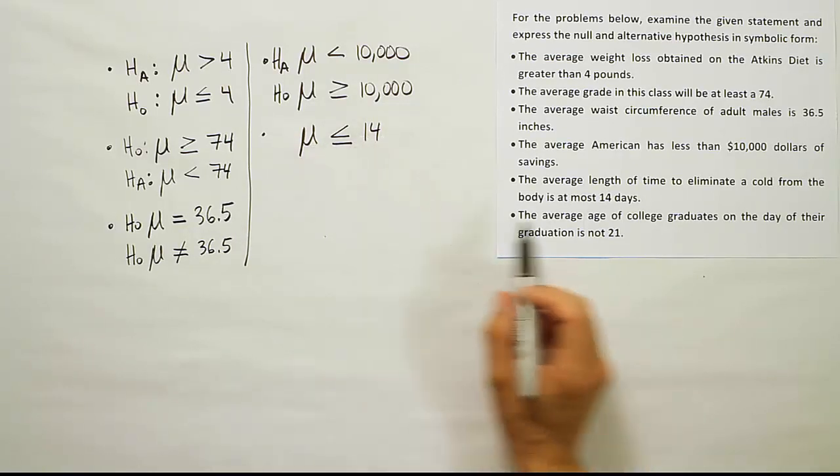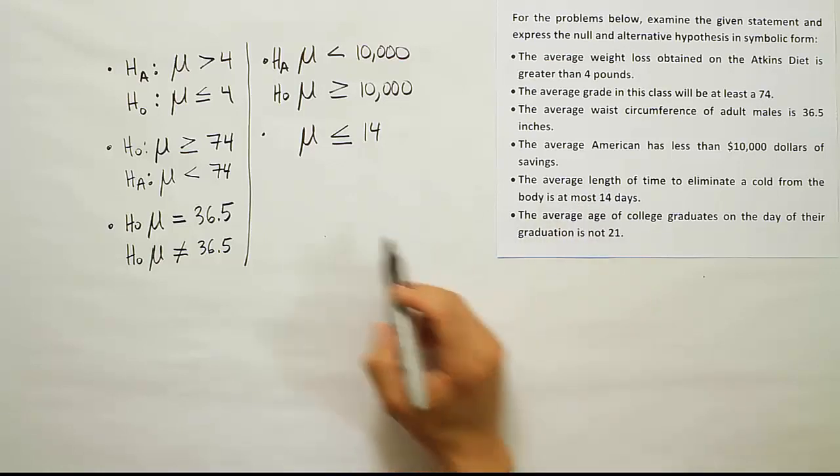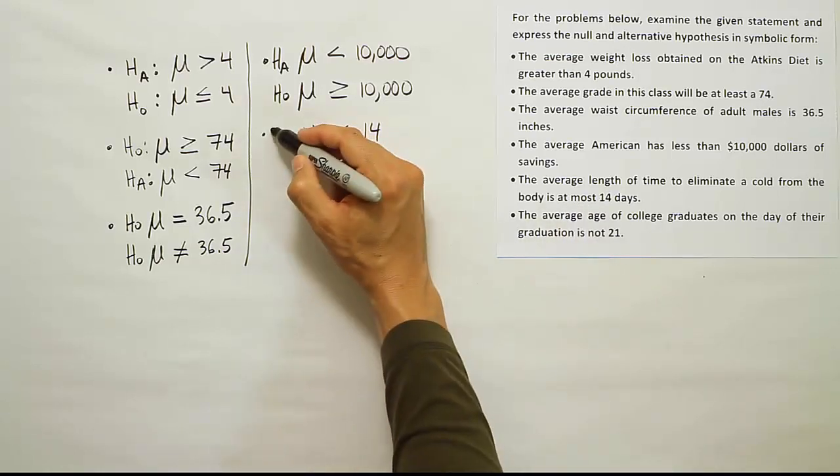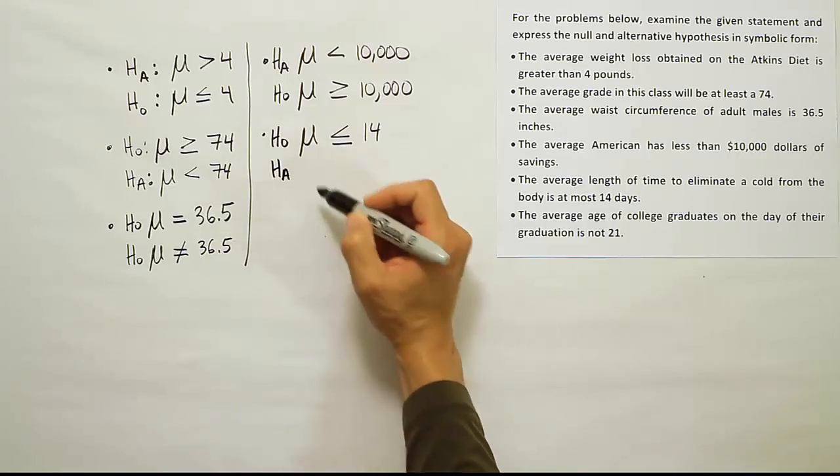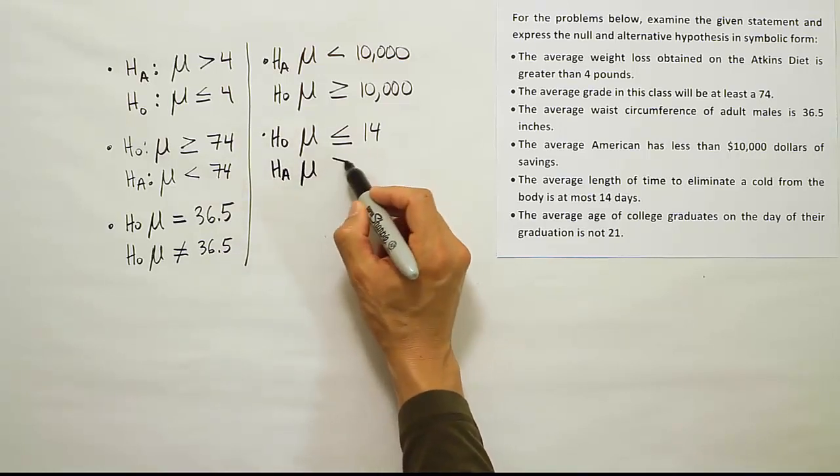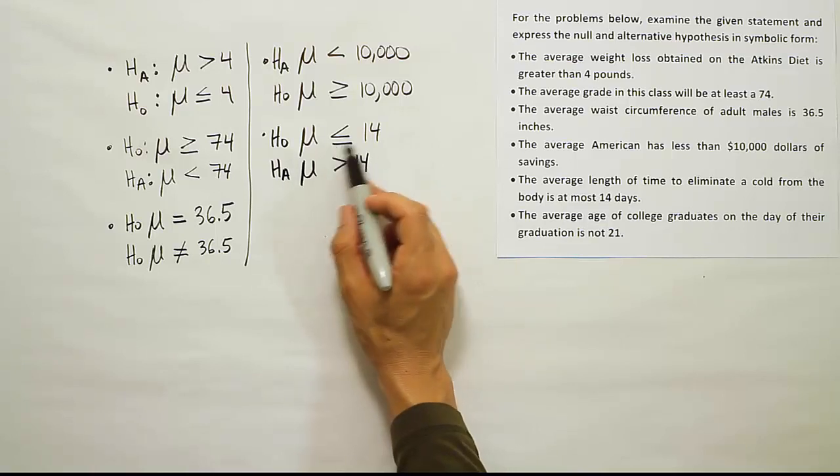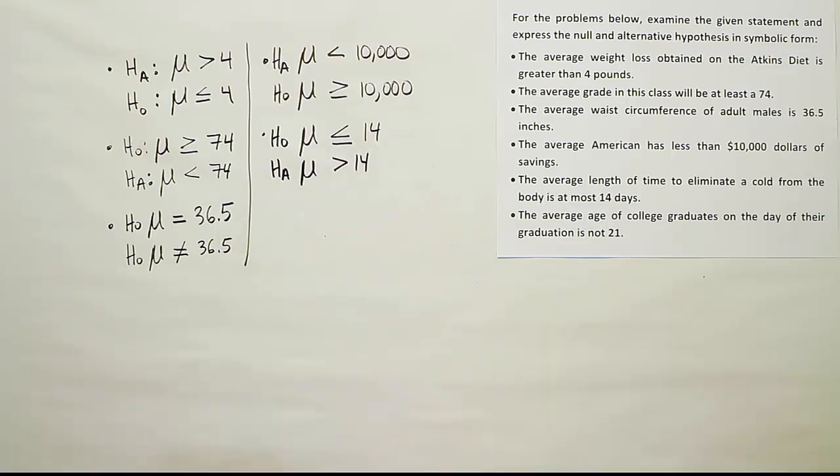That's the phrase at most means. If it has an equal to sign, it's H₀. Its partner then is Hₐ, and that is that the mean would be greater than fourteen days, because if it's not less than or equal to fourteen, it must be greater than fourteen.